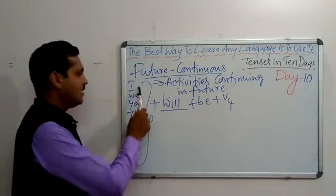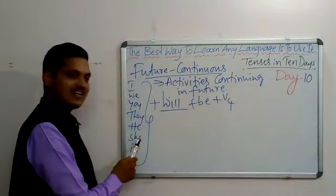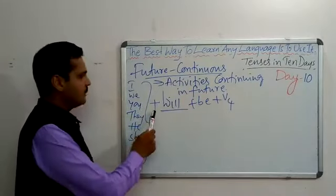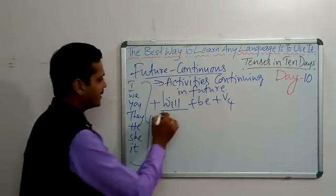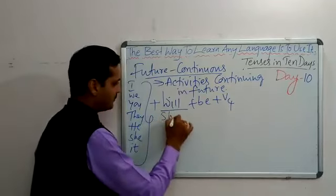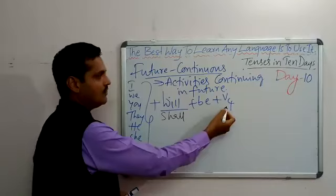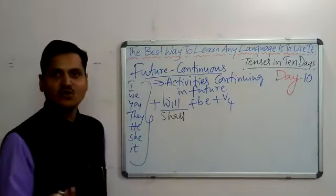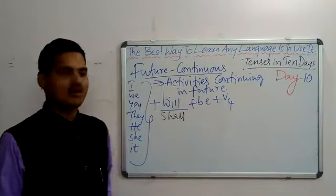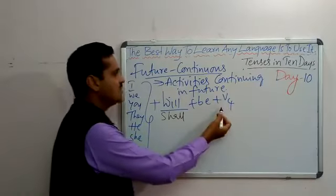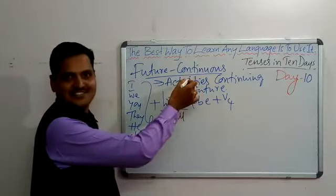The structure is: I, we, you, they, he, she, it — plus will or shall — plus be — plus V4. V4, as you know, is V1 plus the -ing form. V4 is always used for denoting continuity.